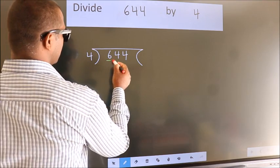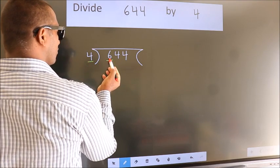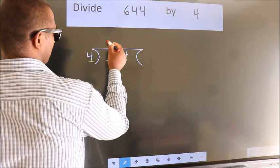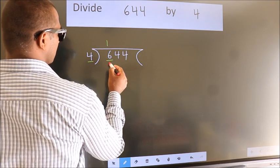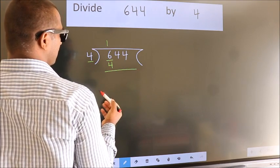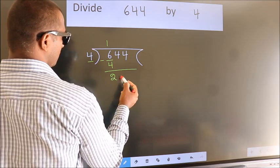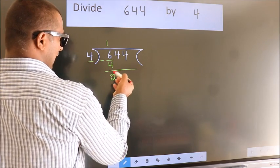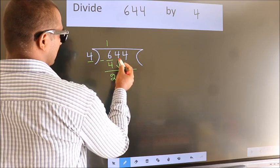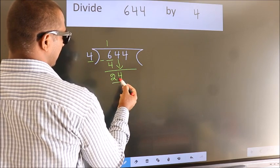Here we have 6, and here 4. A number close to 6 in the 4 times table is 4 once 4. Now we should subtract — we get 2. After this, bring down the beside number. So 4 comes down, giving us 24.